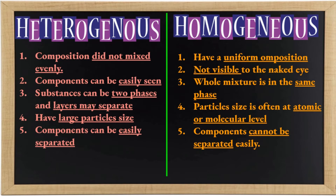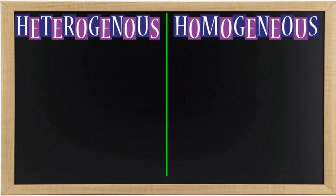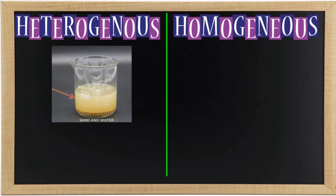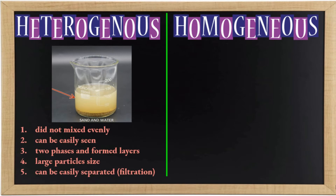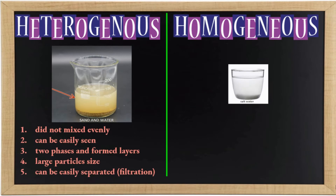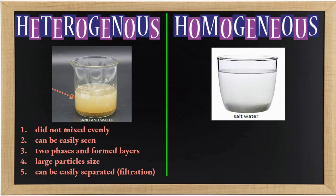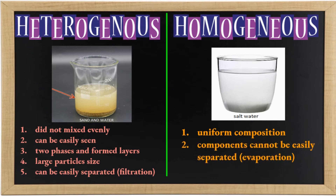What are the examples of heterogeneous and homogeneous mixtures? A mixture of sand and water is an example of a heterogeneous mixture because the components did not mix evenly, can be easily seen, form two phases and layers, and have large particle sizes. They can be easily separated using filtration. While salt water is an example of a homogeneous mixture because the components have a uniform composition, cannot be easily separated, but can be separated through evaporation, and are in the same phase.